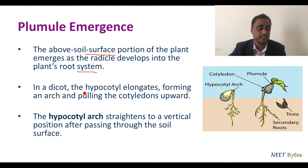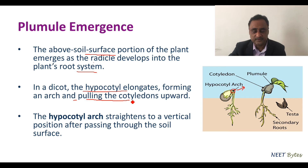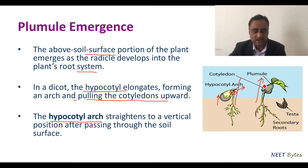After this, we have plumule emergence. The above-soil portion of the plant emerges as the radicle develops into the plant root system. In dicot, the hypocotyl elongates, forming an arc which helps in pulling the cotyledons. As a result, the cotyledons are pulled outside the earth, and later on the hypocotyl straightens to a vertical position after passing through the soil surface.